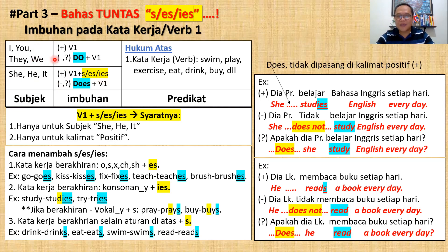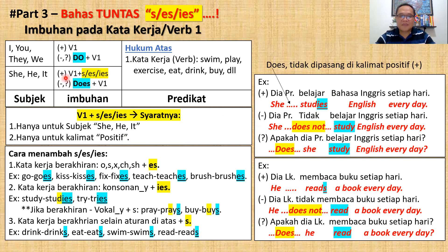Kalau subjeknya are, you, they, atau we, tidak boleh ditambah — cukup kata kerja dasar saja. Syarat kedua: imbuhan s, es, ies hanya untuk kalimat positif. Ketika negatif, imbuhan tersebut hilang. Contoh: 'she studies' — pada positif ada ies, tapi begitu negatif kembali ke dasar: 'study'. Ketika sudah ada does pada negatif dan pertanyaan, kata kerja asli jangan ditambah s, es, ies.